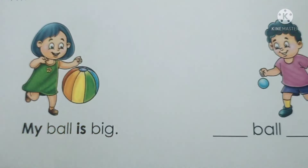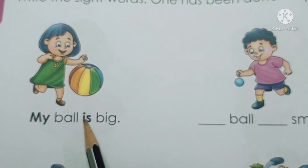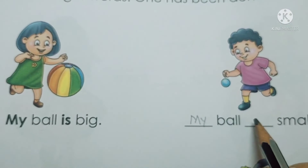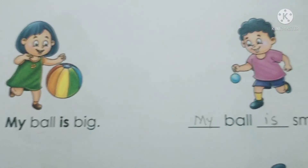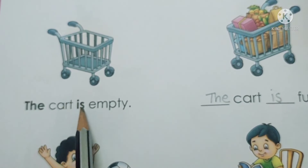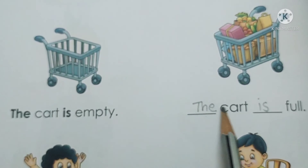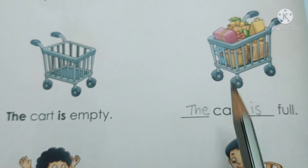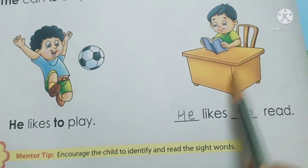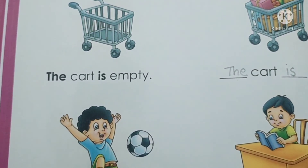Now in page number 30, there are two sight words: my and is. My ball is big. So here — my ball is small. The cat is empty. The car is full. He likes to play. He likes to read. So complete this page and send the audio.